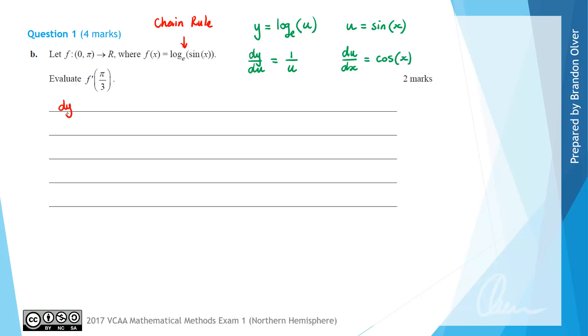From our formula sheet, the chain rule calculates dy/dx = dy/du × du/dx. Therefore, the derivative f'(x) equals dy/du, which is 1/u, but u has the rule sin(x), so we multiply that by du/dx, which is cos(x). That is equivalent to cos(x)/sin(x).